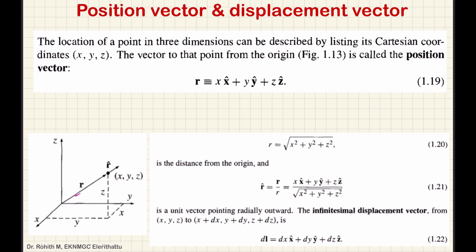We can also have a displacement vector. Suppose a particle is at a point with coordinates (x, y, z) and moves a very small distance to a new point with coordinates (x+dx, y+dy, z+dz). The infinitesimal displacement vector is obtained by taking the difference: dx x-hat plus dy y-hat plus dz z-hat. This is the infinitesimal displacement vector.